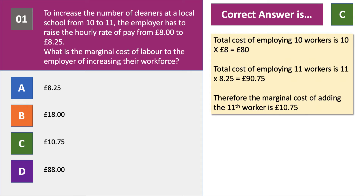They employ 10 people, so the hourly labour cost is £80 (8 times 10). They employ 11 people at £8.25, which is £90.75. They also have to pay the existing 10 people another £0.25 per hour. That adds up to £90.75, which means the cost of adding the 11th worker is £10.75. Answer C.